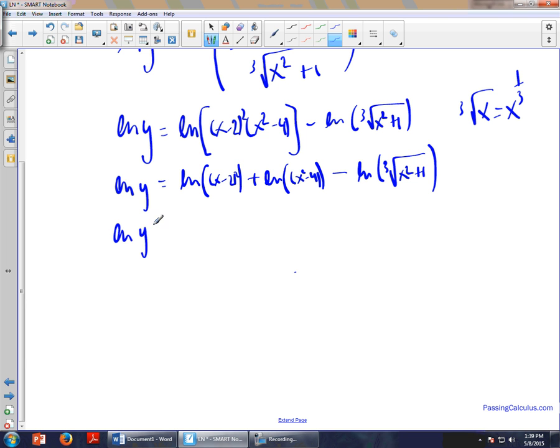So ln of y is equal to, and the rule is of course these exponents come in and plop right out in front as coefficients. So once where there was a chain rule, now there is no longer a chain rule. This one doesn't change. And this one, since that's exponent one over three, there's a one over three here on the outside, ln of x squared plus four.